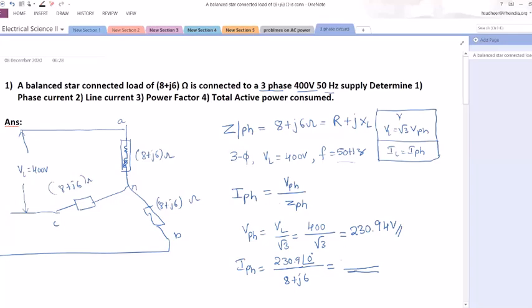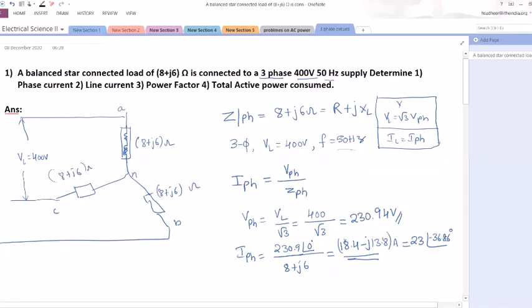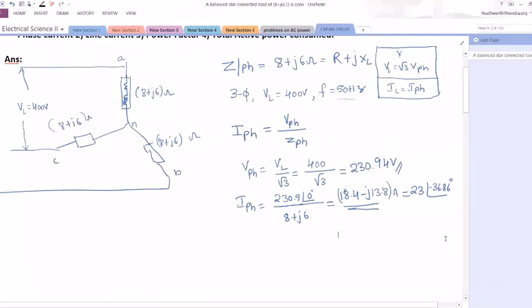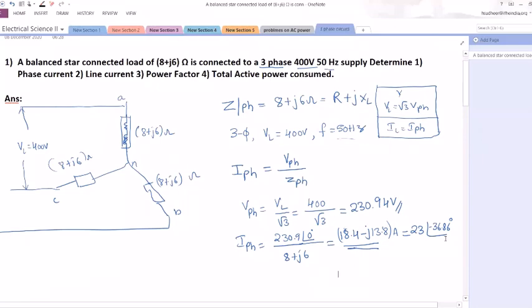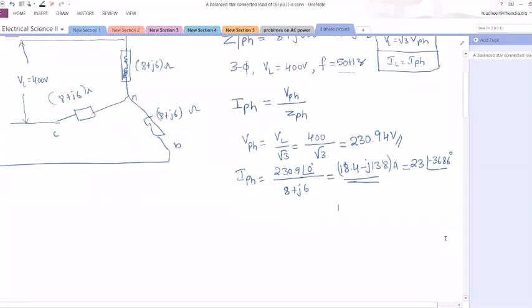So as I said, the answer which you are going to get is 18.4 minus j13.8 amperes. We need to convert this into polar form so that I can draw the phasor diagram. So if you convert this into polar form, the current flowing through the circuit or phase current is equal to 23 at an angle of minus 36.86 degrees.